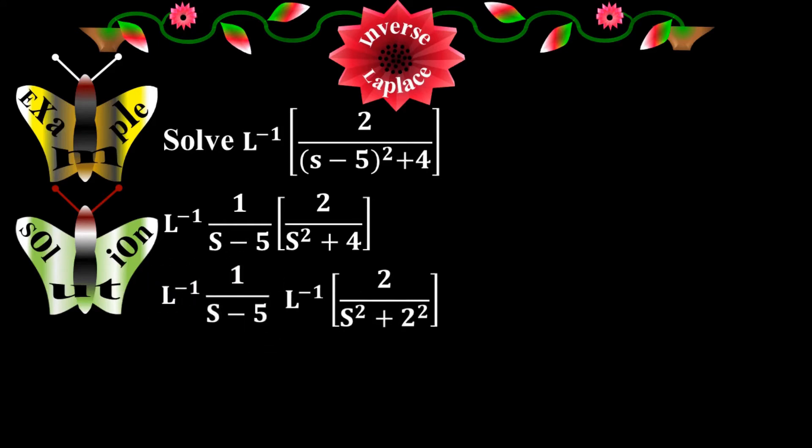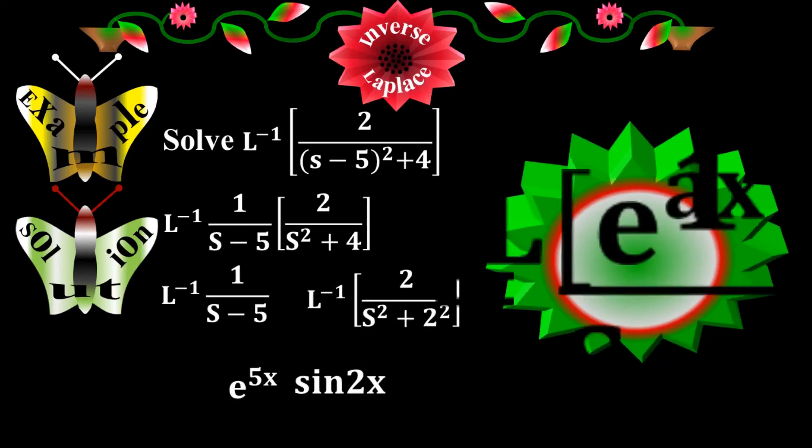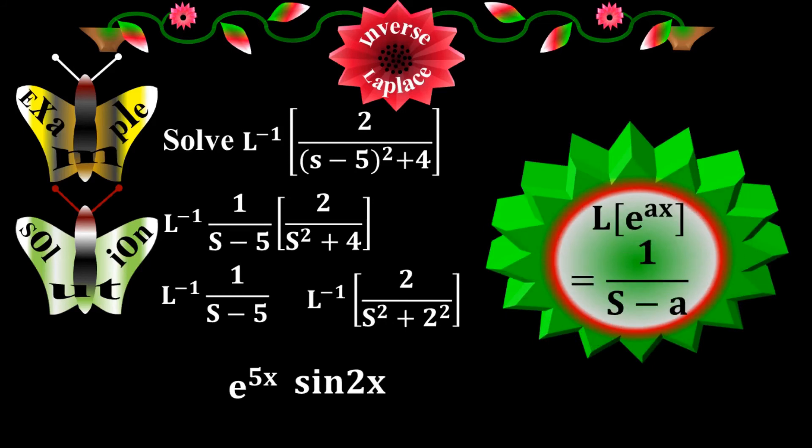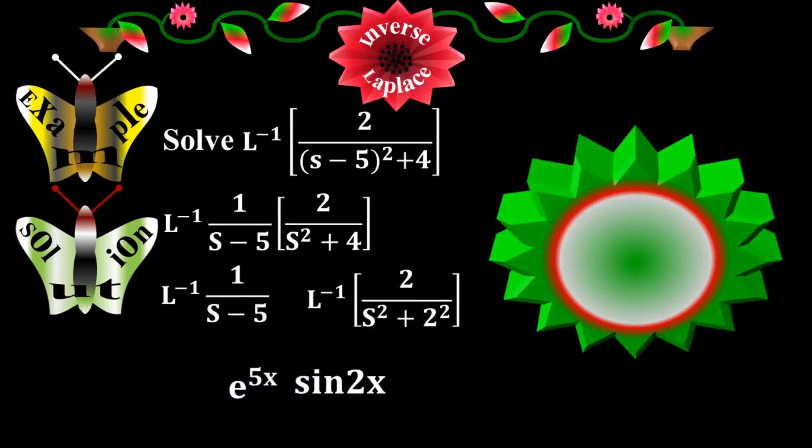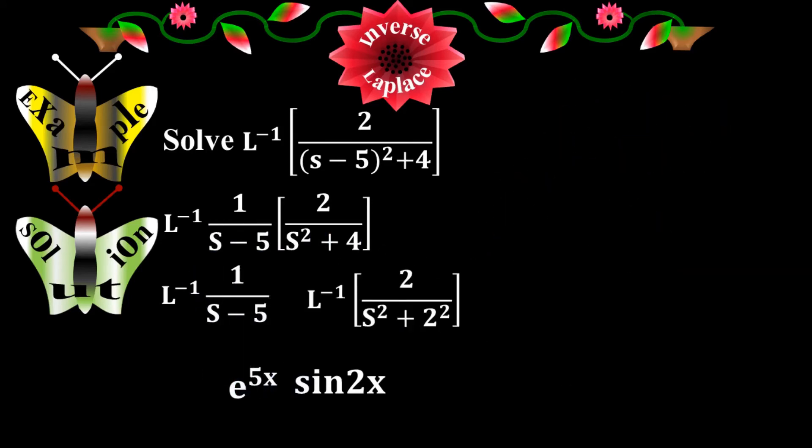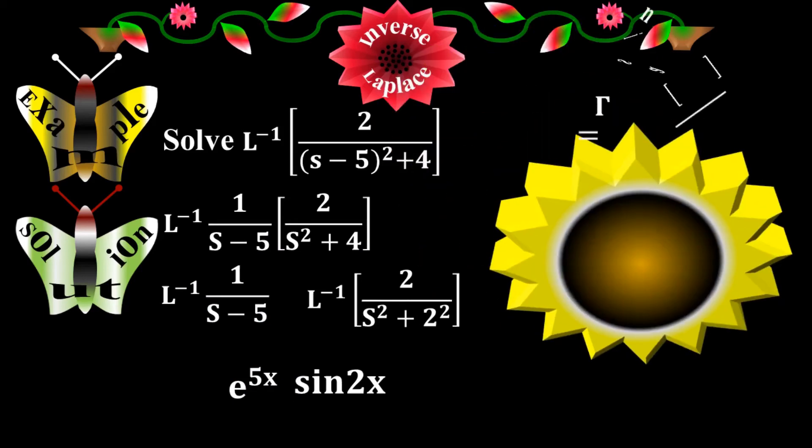Inverse Laplace of 1/(s-5) equals e^(5x). Inverse Laplace of 2/(s²+2²) equals... How to know that? According to the second elementary condition here, which is Laplace of e^(ax) equals 1/(s-a). My constant a is 5 here. It is according to the fourth elementary condition. My constant a is 2 here.